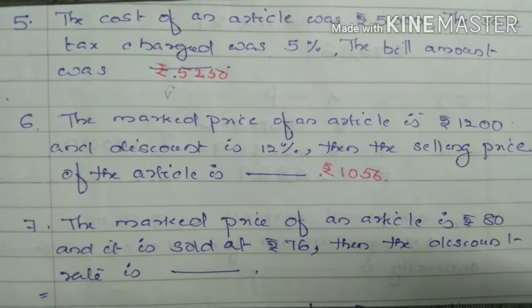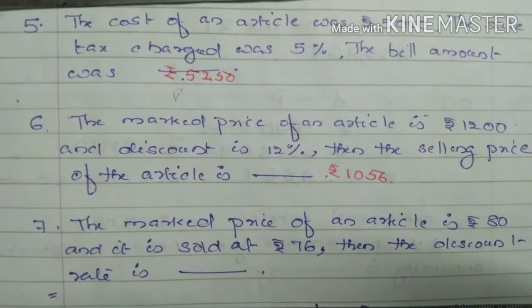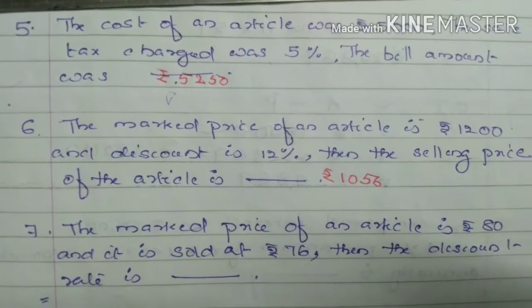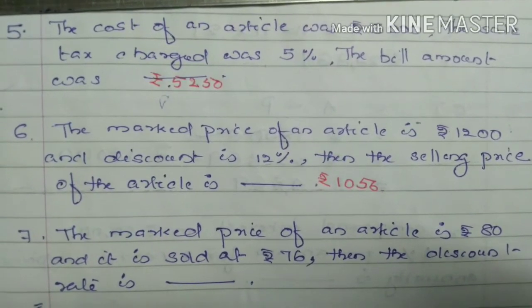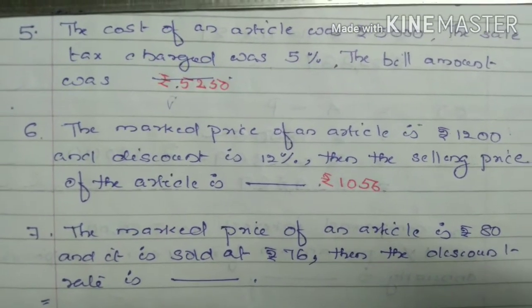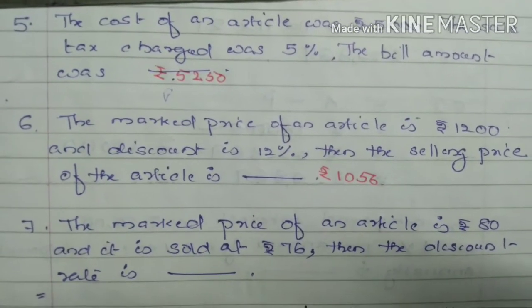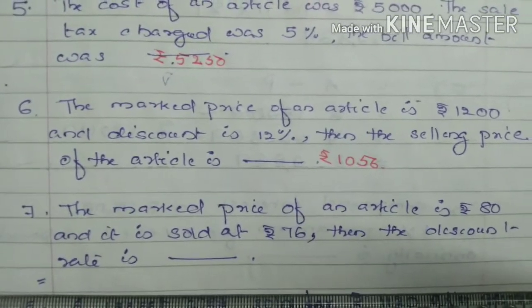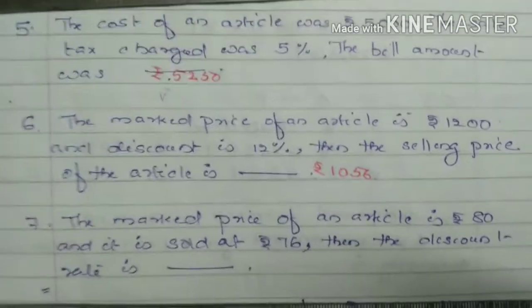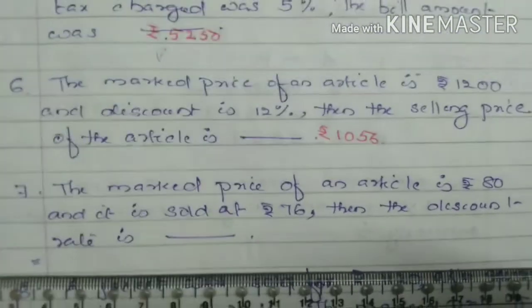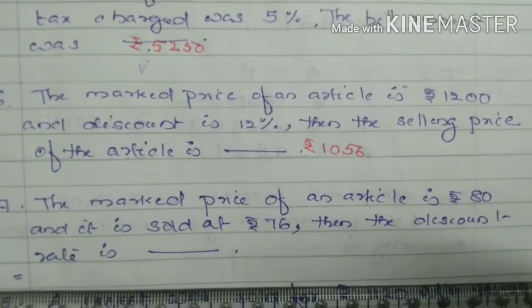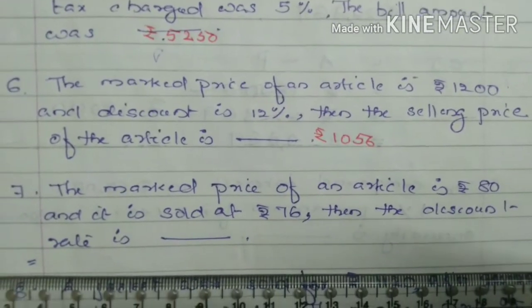7th question: The marked price of an article is Rs. 80 and it is sold at Rs. 76. Then the discount rate is asked — that means you have to find the discount percentage.